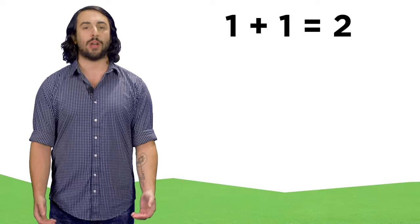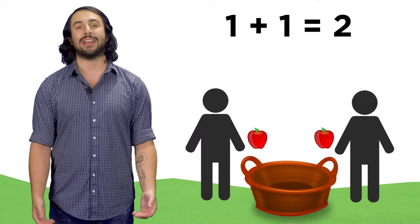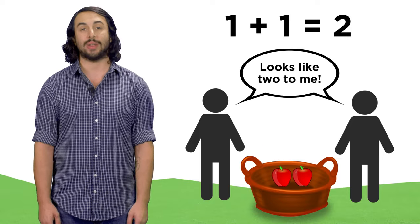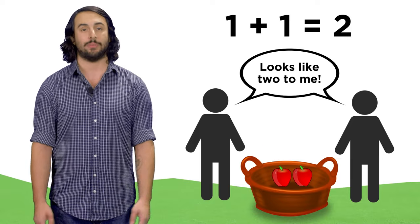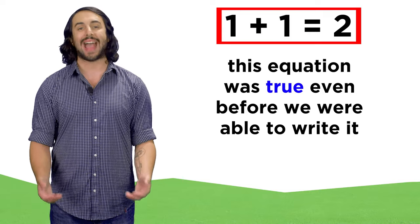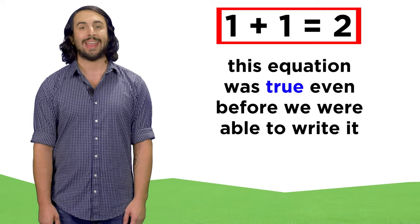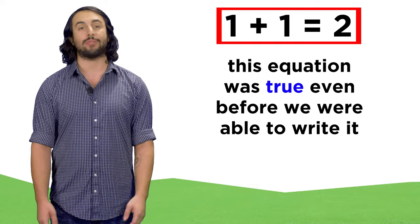The fact that one plus one equals two does not rely on two people each putting an apple into a basket and then agreeing that the result is two apples. It's just true. The equation that represents this action was true before any humans were even born, and it will be true long after they all die.